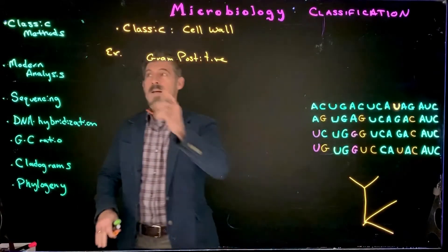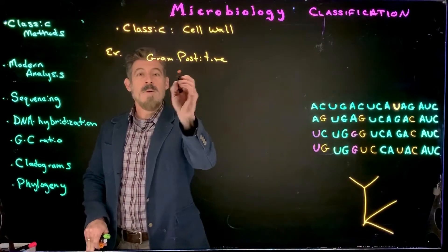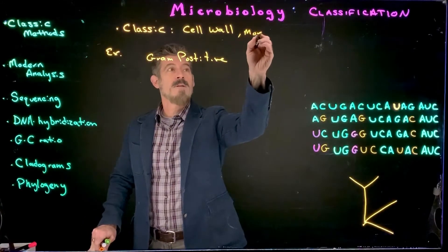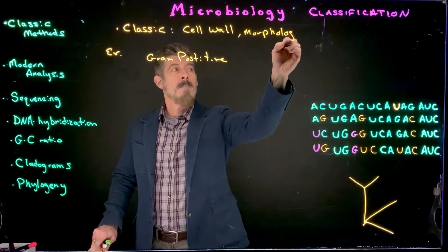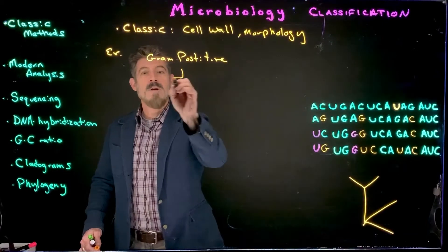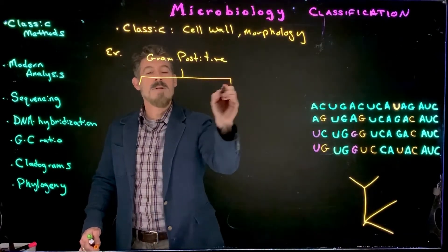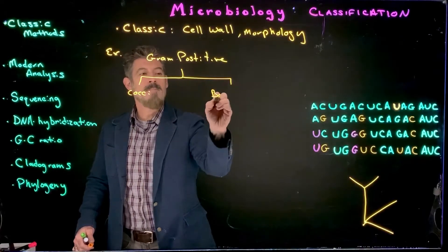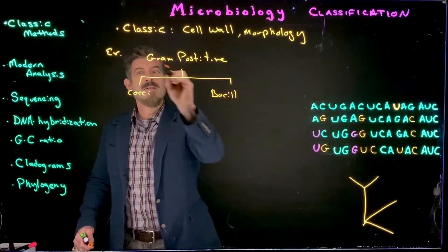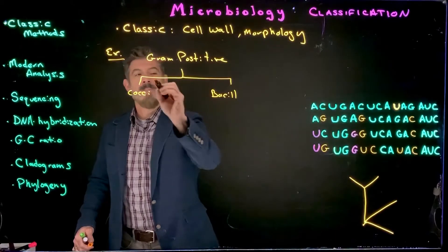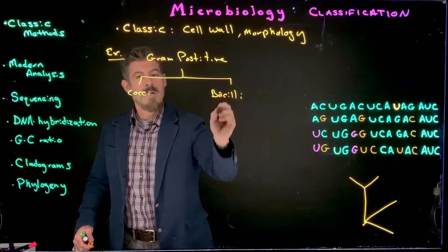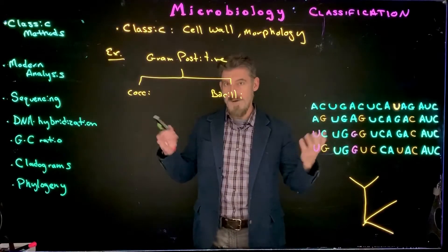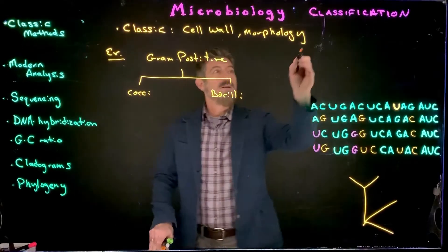For gram-positive bacteria in a classic method, one of the next things we might do is look at morphology. After cell wall, we might look at morphology — separating them into groups based on cocci and bacilli. Obviously there are other shaped bacteria as well, but we're just breaking it down.